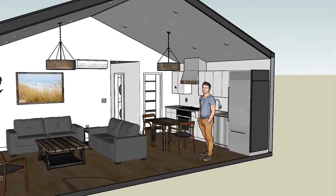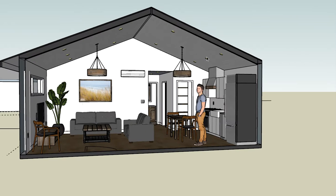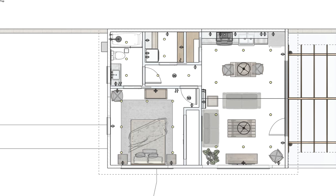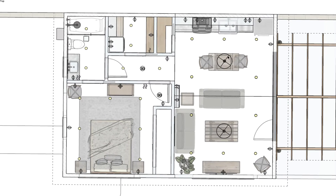I hope that gives you the lighting concept for this room. Let's jump back up to the ceiling plan view — you can see those chandeliers over the table with lighting around the outside.